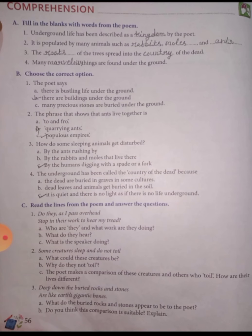Let's start with the comprehension part. First, fill in the blanks with words from the poem. First: underground life has been described as a 'kingdom' by the poet. Second: it is populated by many animals such as rabbits, moles, and ants.